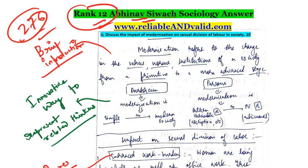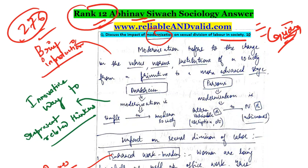Let's take a look at this question right away. As I said, the video editing, presentation, transitions, animations, and logos — we might not be very good at those, but we are very good at guiding you for sociology. The question is: discuss the impact of modernization on sexual division of labor in society. It is a 10-marker question that asks you to interlink two topics — modernization and division of labor — both of which are syllabus topics that may appear in paper one, paper two, or across both.